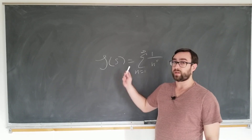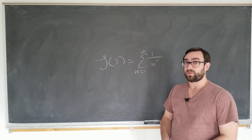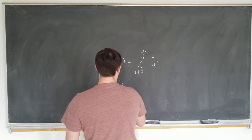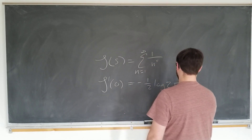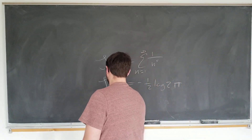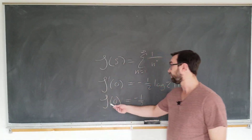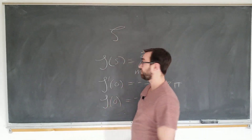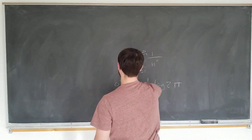All we need are some special values from the function, which we're not going to derive in this video but perhaps in a subsequent video. We've also derived already that zeta prime of 0 is negative one-half log of 2π. We're also going to be using the value that zeta of 0 is minus one-half. If you see a weird symbol, it's probably the zeta function.